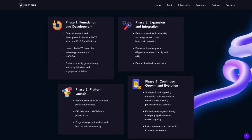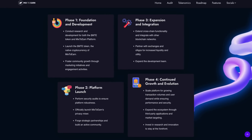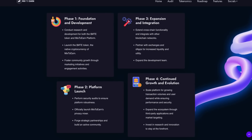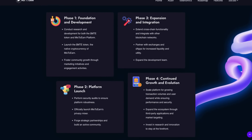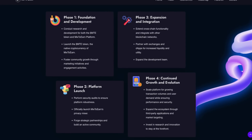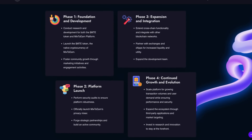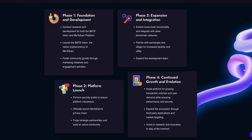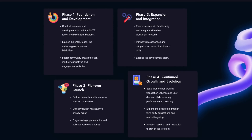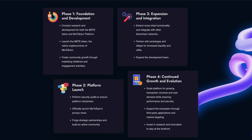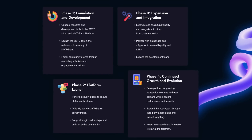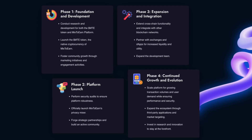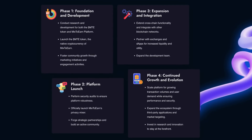Now let's move on to the roadmap. Phase 1, Foundation and Development: conducting research and development for both the MTE token and Mix2Earn platform, launching the MTE token, the native cryptocurrency of Mix2Earn, and fostering community growth through marketing initiatives and engagement activities. Phase 2, Platform Launch: perform security audits to ensure platform robustness, officially launch the Mix2Earn Privacy Mixer, form strategic partnerships, and build an active community. Phase 3, Expansion and Integration: extend cross-chain functionality and integrate with other blockchain networks, partner with exchanges and dApps for increased liquidity and utility, and expand the development team. Phase 4, Continued Growth and Evolution: scale the platform for growing transaction volumes and user demand while ensuring performance and security, expand the ecosystem through third-party applications and market targeting, and invest in research and innovation to stay at the forefront.